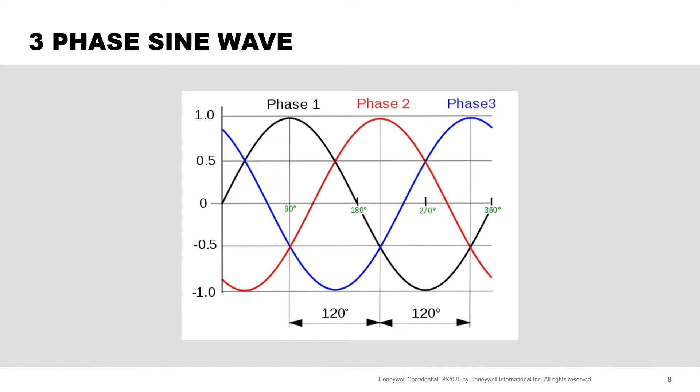Single phase power uses two wires and is a sine wave of voltage alternating from positive to negative. With three phase, there are three signals and they are staggered 120 degrees apart. Three phase uses three wires and is used for higher power applications.